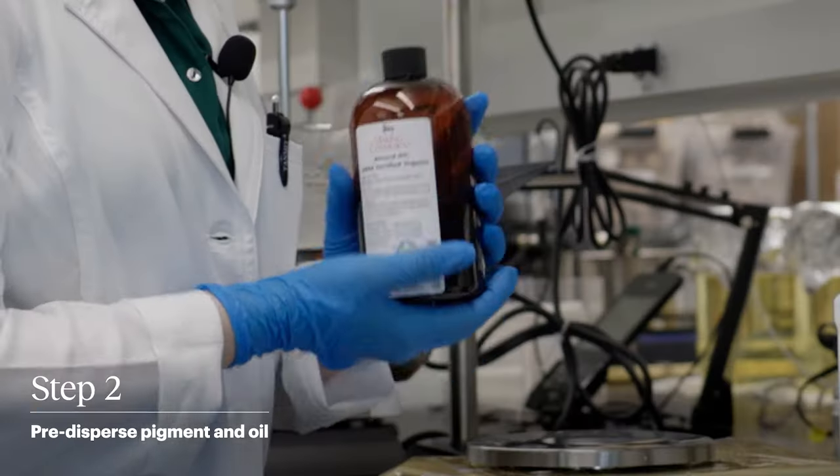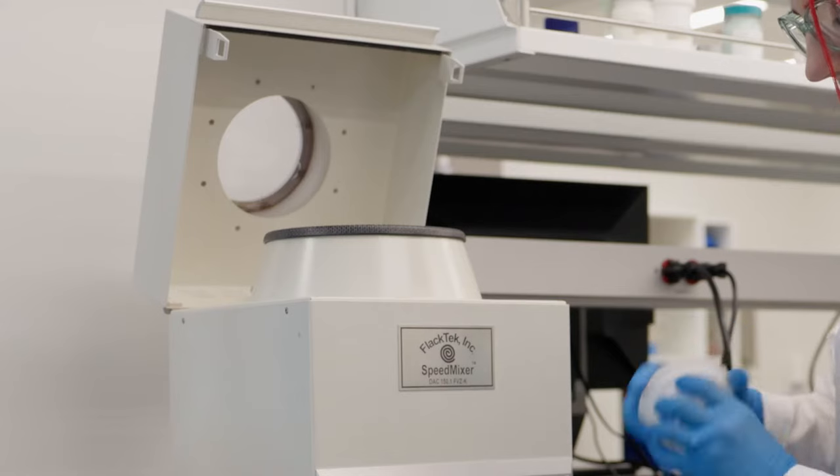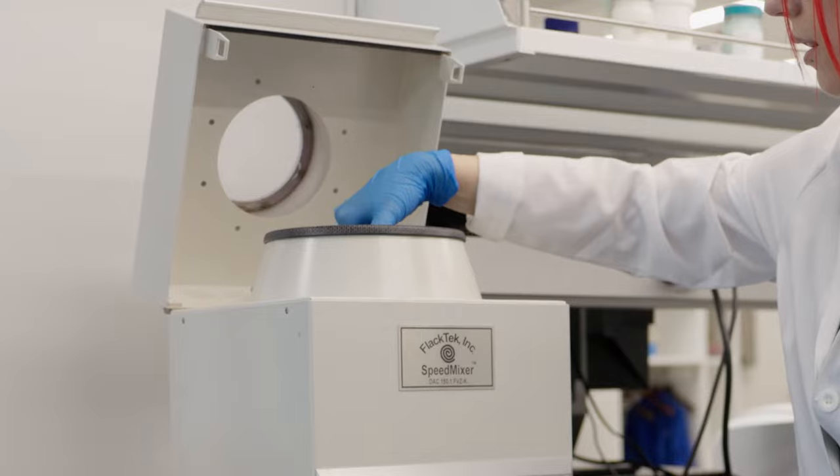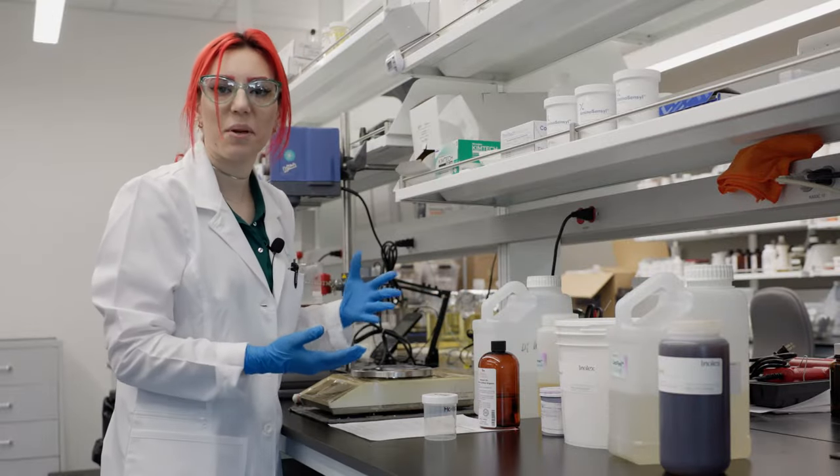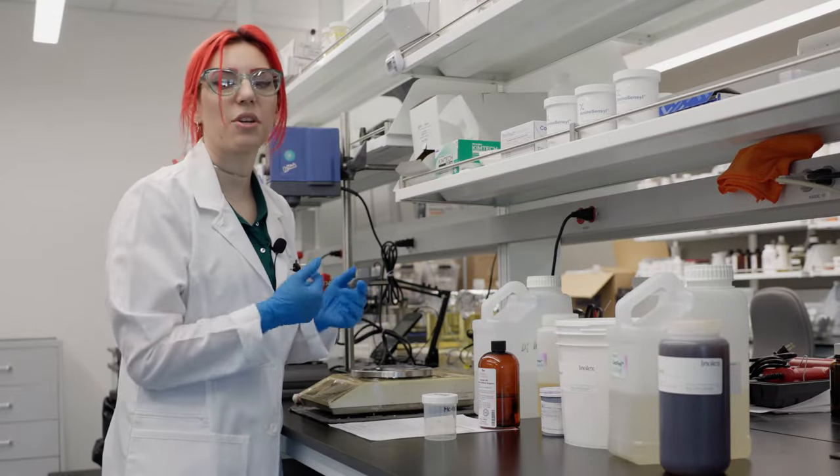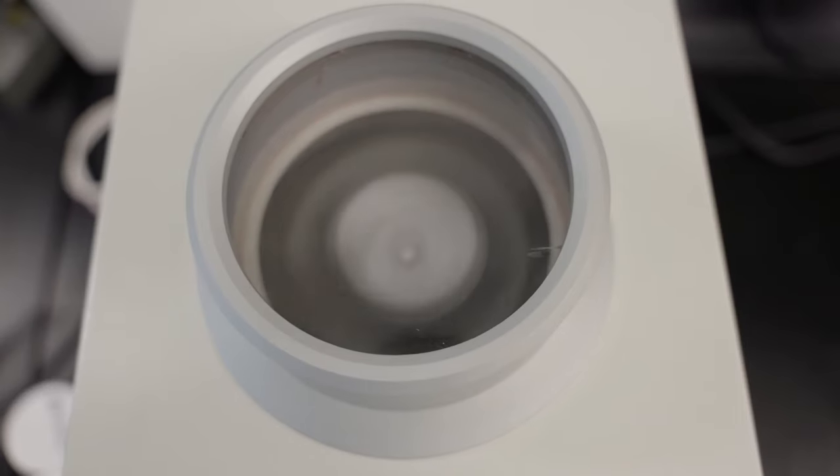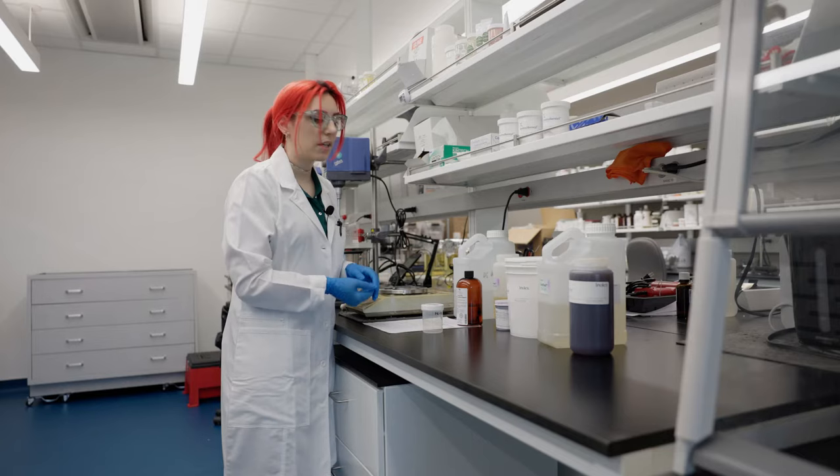The first thing we do is add our almond oil. We have a machine called a Speed Mixer, and it's essentially the way that a paint mixer works, where it will disperse your powder into whatever oil or excipient that you have.